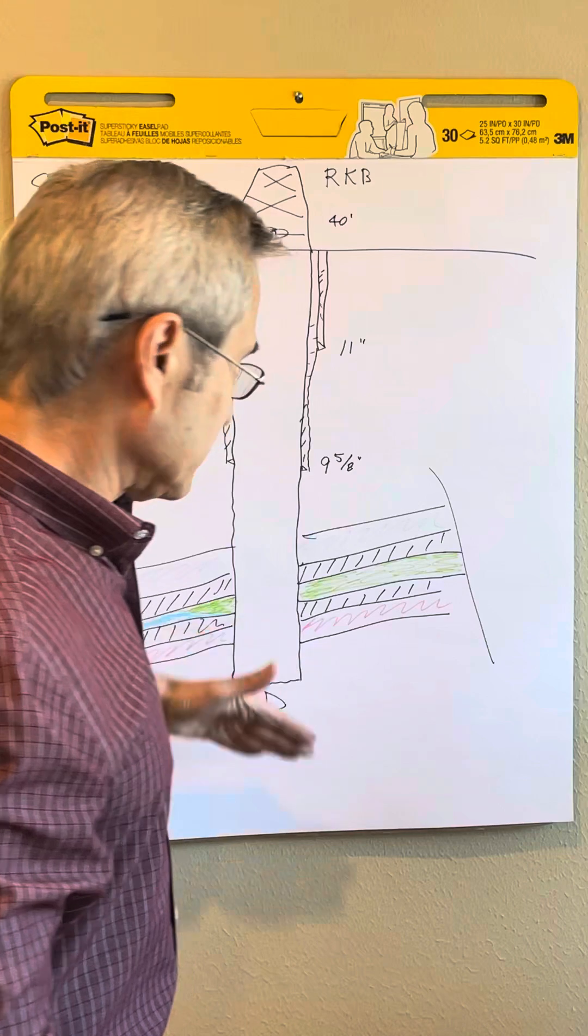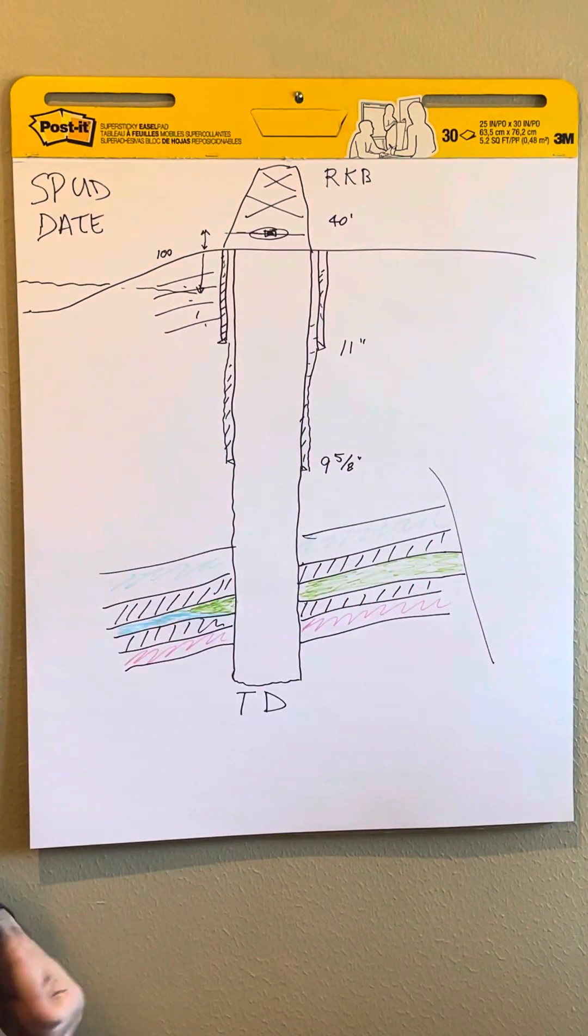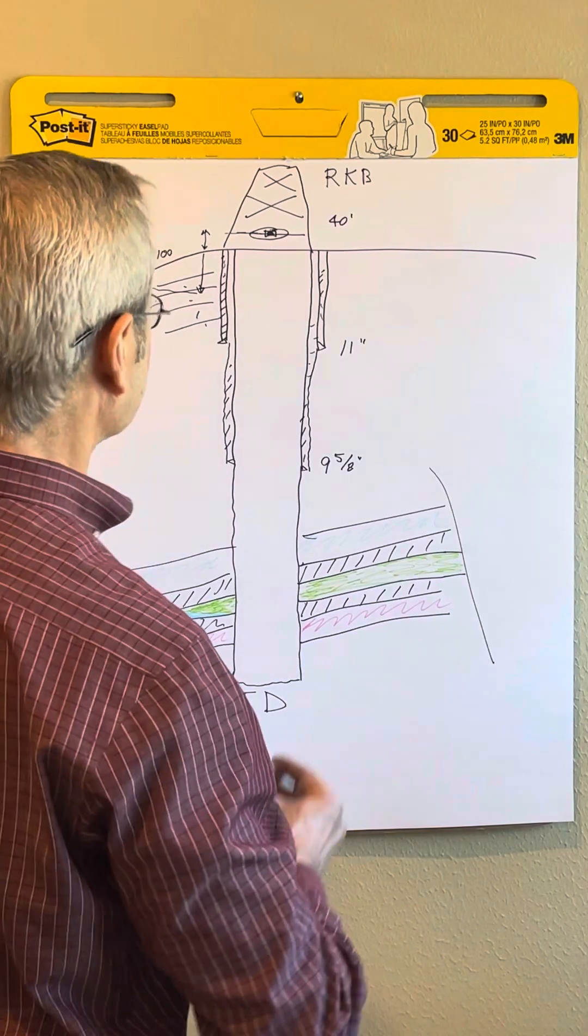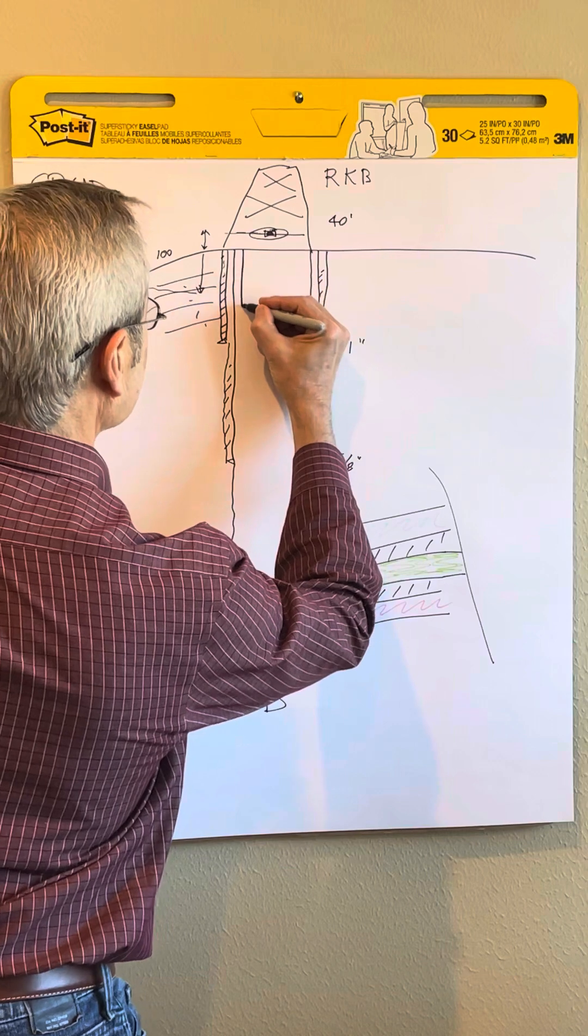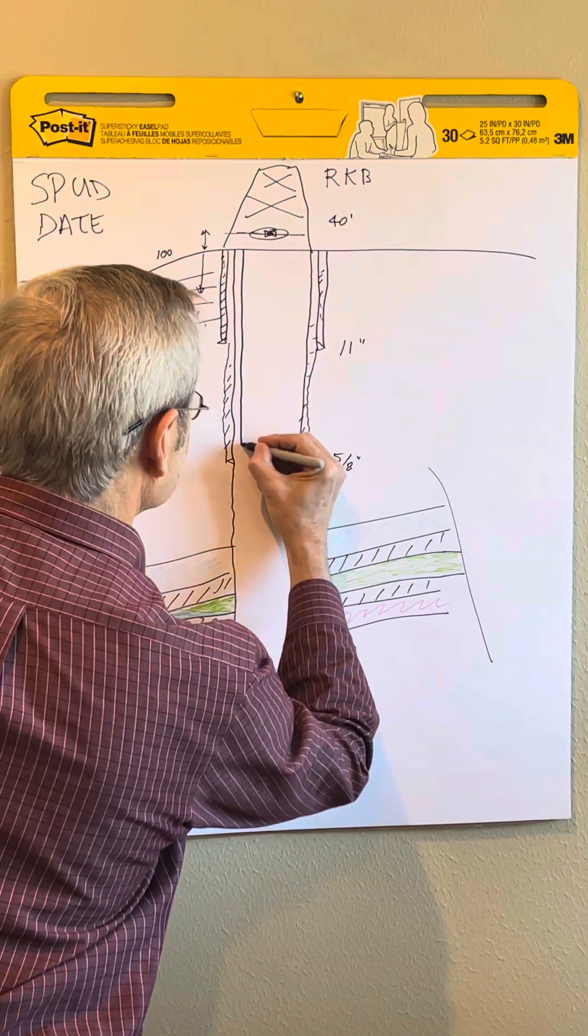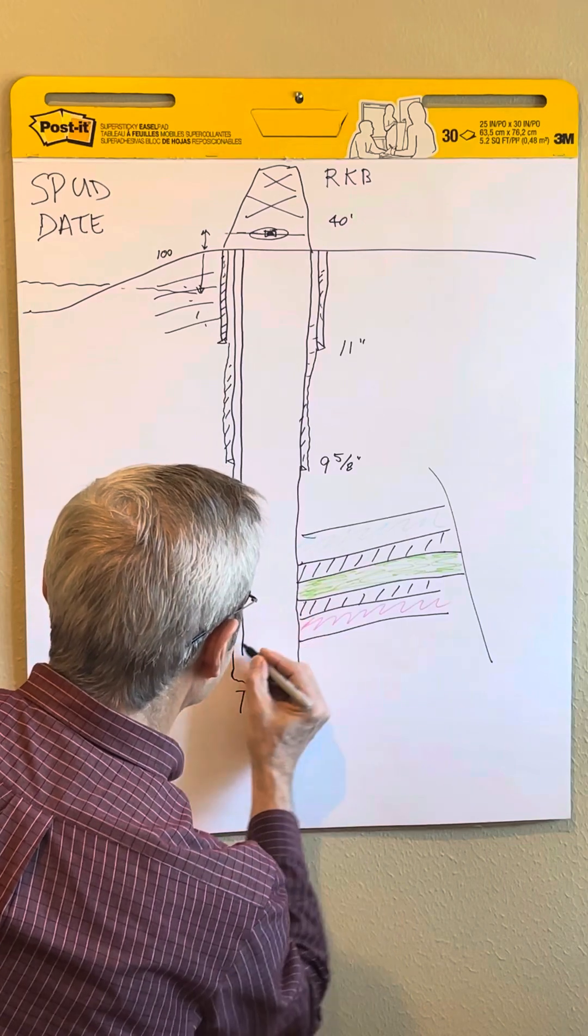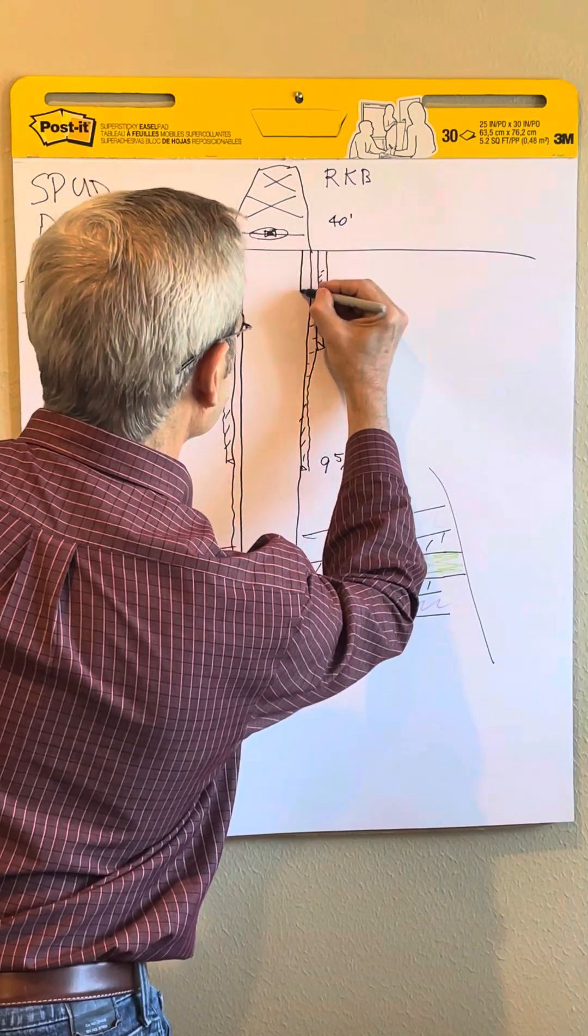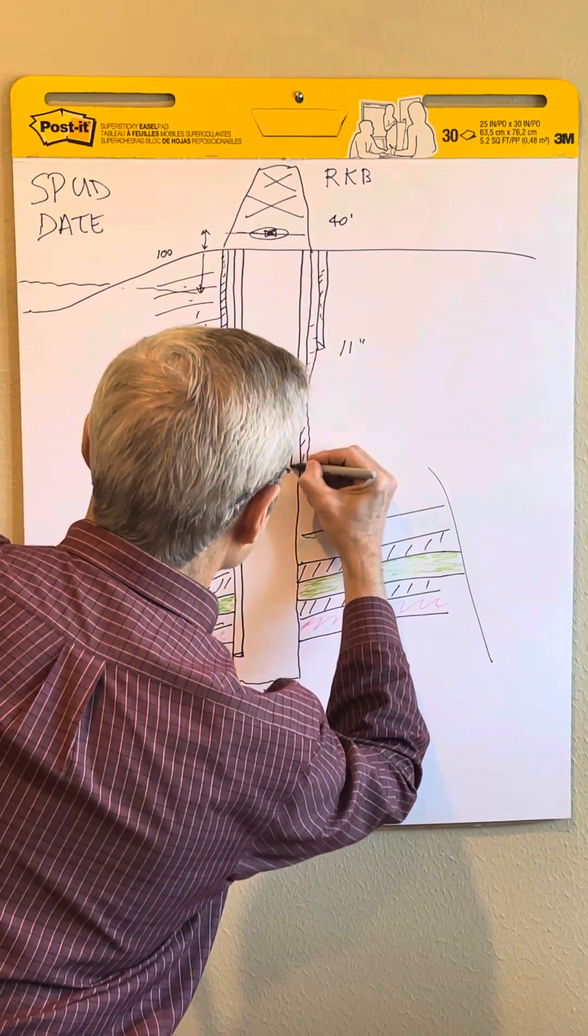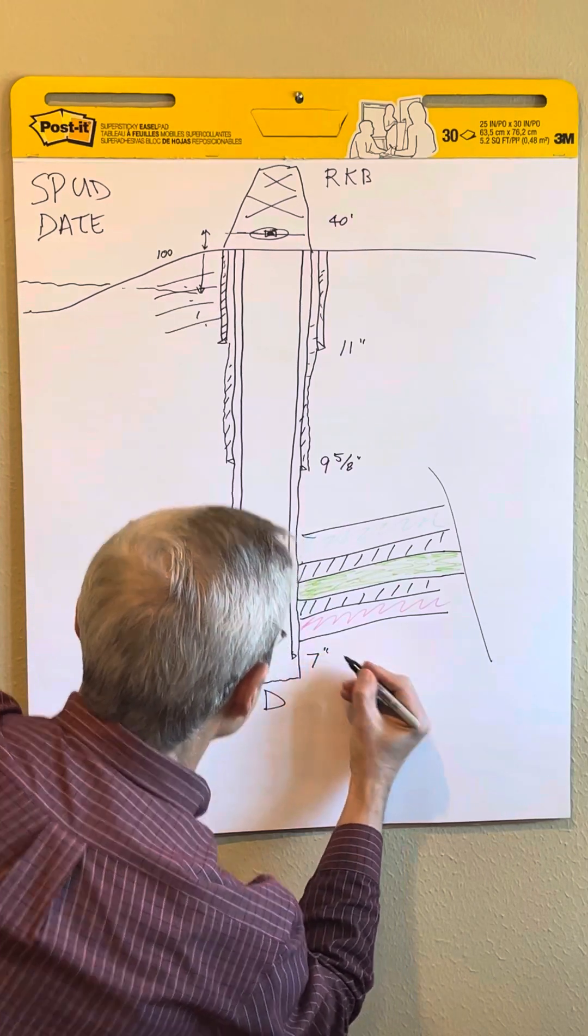Now we have to complete the well. If it has no oil and gas, we call it a dry hole and we plug it. But now we're going to complete it and run another string of pipe called the production casing. You run that all the way down to the total depth or below the last productive zone. That might be like a 7-inch pipe.